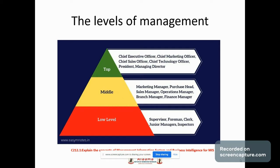The first one is the top level, or we can say administrative level. The second one is middle level or executory level. The third one is low level, or supervisory level, or operative level, or first line managers. Now, the top level of management consists of board of directors, chief executives, or managing directors.